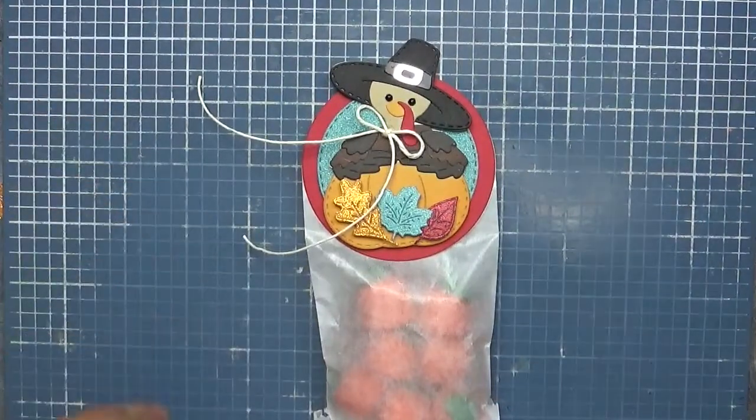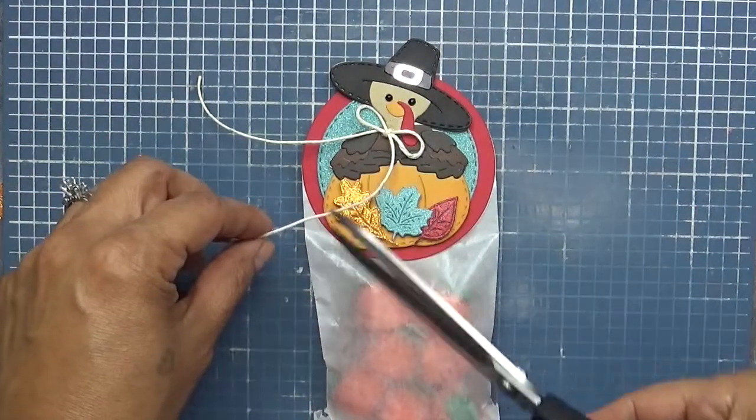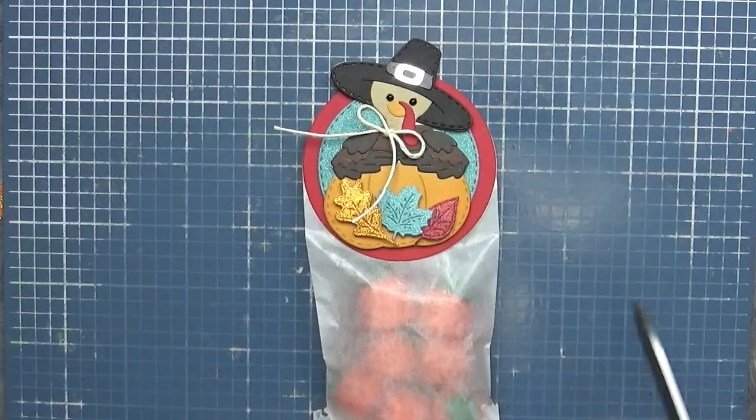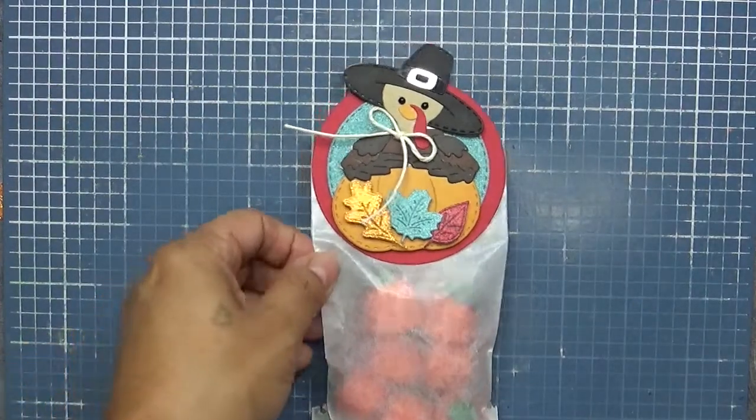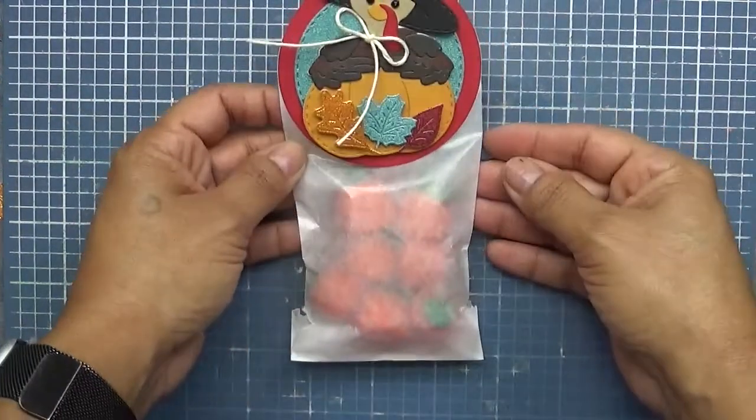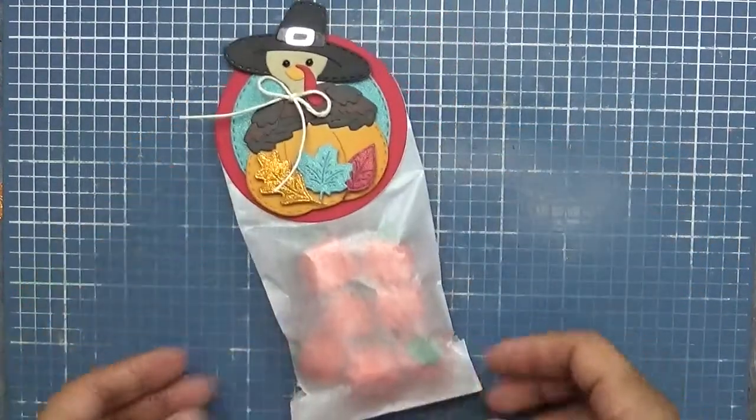There we go. Super cute. All right. So let's just go ahead and just trim these up right there. And then that's it. A super cute, easy little topper you could throw together in no time.